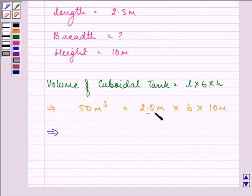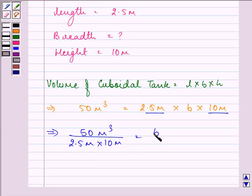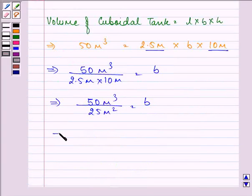Transposing 2.5 meters and 10 meters to the left-hand side, we have 50 cubic meters divided by 2.5 meters times 10 meters. That is further equal to, on calculation, 50 cubic meters divided by 25 square meters, which equals 2 meters.